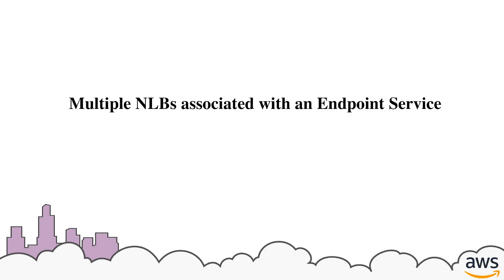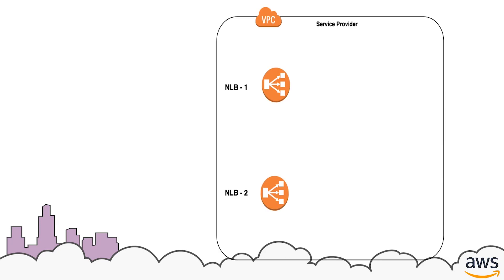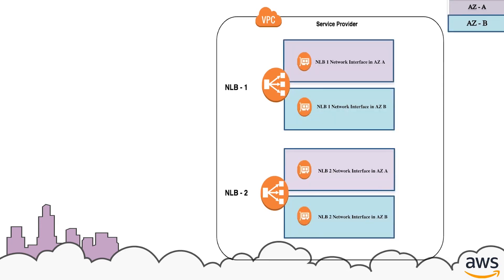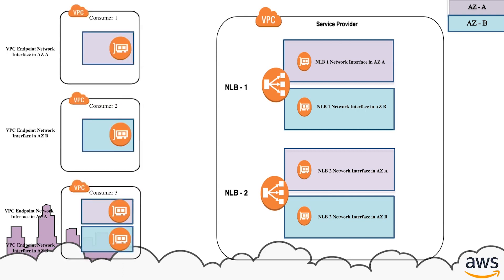Now let's see the case where we have multiple NLBs with the endpoint service. Let's say you associated two NLBs with the endpoint service, NLB1 and NLB2. Each NLB has both the AZs enabled and therefore has one elastic network interface in each of the enabled AZs. Similar to the previous example, there are three endpoint consumers connecting to the endpoint service. Consumer 1 has enabled only AZ-A, Consumer 2 has enabled only AZ-B, and Consumer 3 has enabled both AZs and thus has an endpoint interface in both AZ-A and AZ-B.